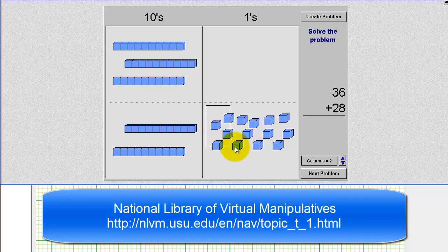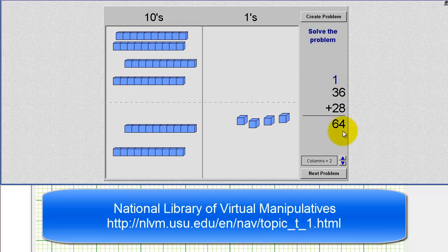So again, this is fourteen one blocks, which is equal to one ten block and four one blocks. So we'll move this ten block over to the tens. Again, on paper, we put the four in the ones place value and put an extra one in the tens place value because of the extra ten block.